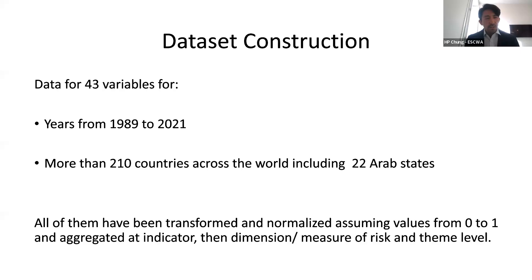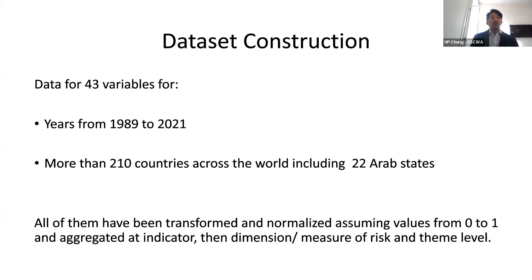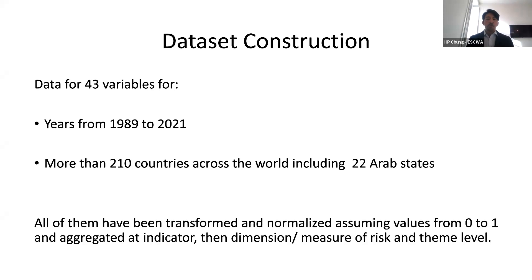We also prioritized SDG indicators and other internationally agreed datasets, related to their availability and to the prioritization in the UN-wide data strategy. Our dataset consists of 43 variables from around 30-plus years of data. Although the results presented today focus on the 22 Arab states, we do have data across these time series for all countries.